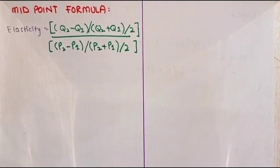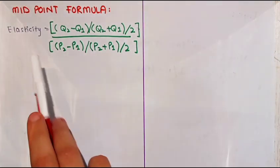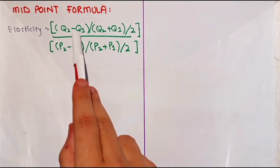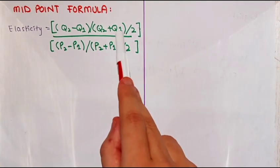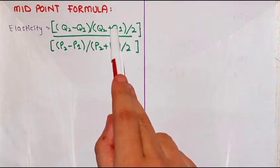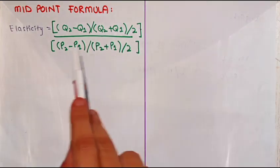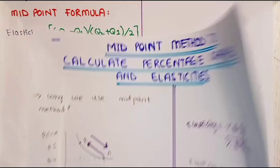So whenever it is required to find elasticity between two points, we have to follow the midpoint formula, which is: elasticity equals (Q2 minus Q1) divided by (Q2 plus Q1) divided by 2, overall divided by (P2 minus P1) divided by (P2 plus P1) divided by 2.